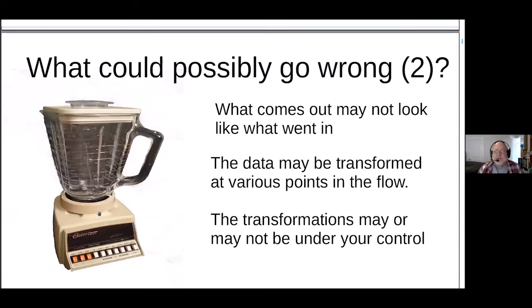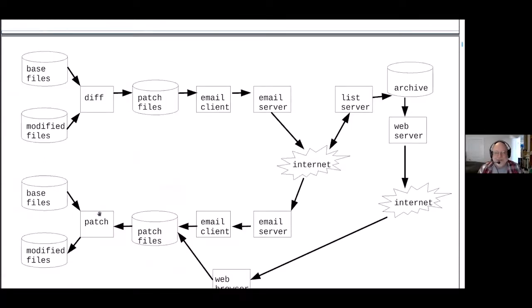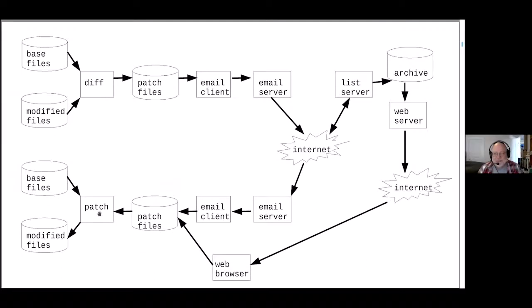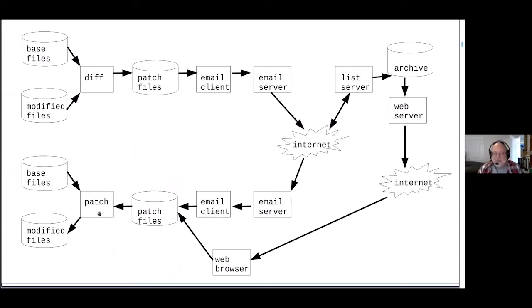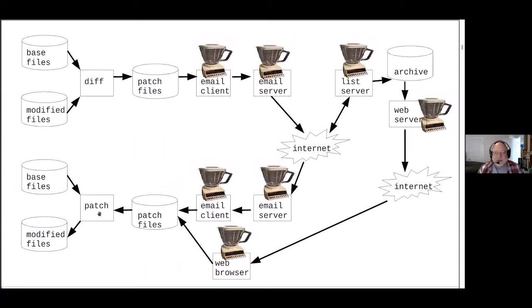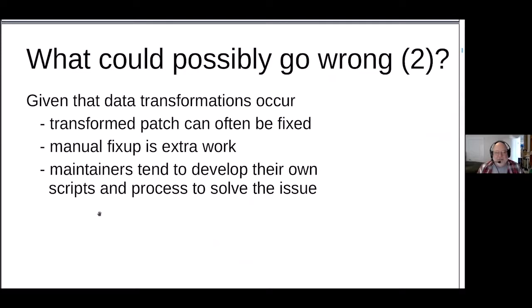You may be able to choose what email client you use, but you may or may not be able to choose what email server you use. Looking at the diagram, there are quite a few different places where data can be manipulated — email clients, email servers, web servers serving archive content, email clients receiving email, web browsers retrieving patches from a web archive. Historically what we've done is manually fix up those problems, which turns out to be extra work, and each maintainer has their own scripts and processes to solve those transformation issues.